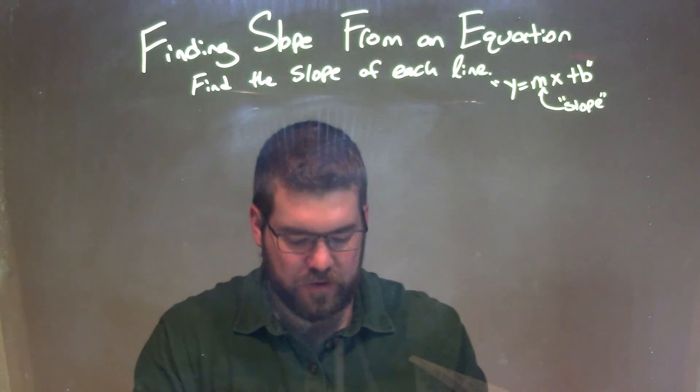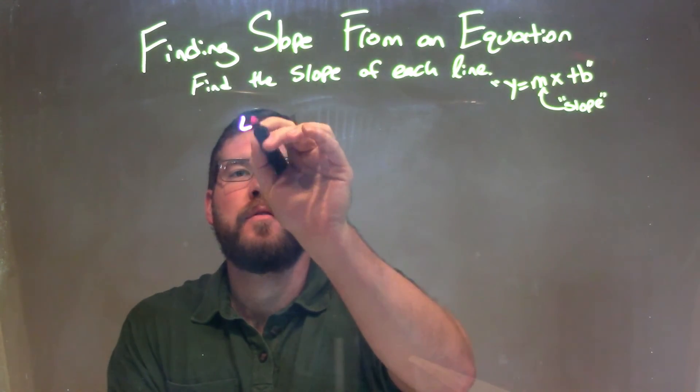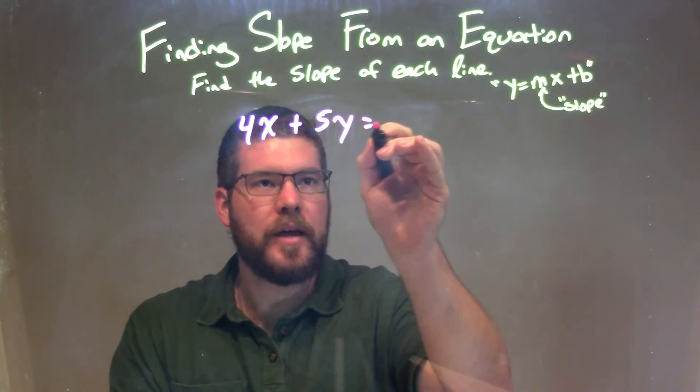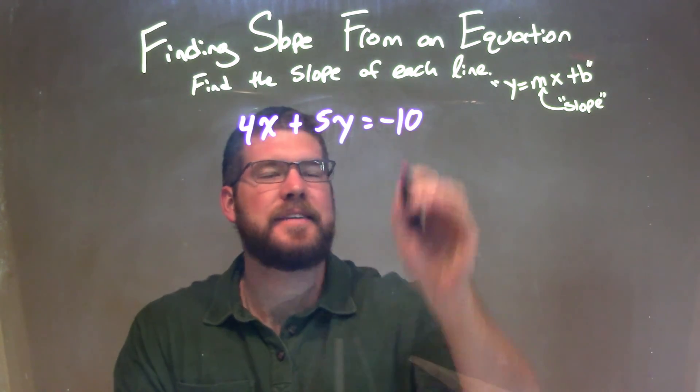We're going to find the slope of each line. So if I was given this equation: 4x plus 5y equals negative 10.